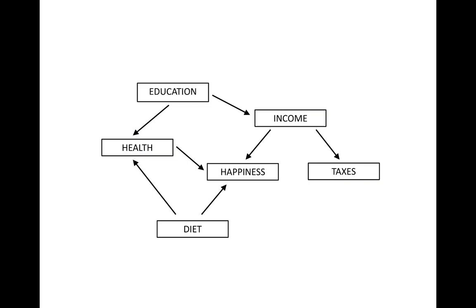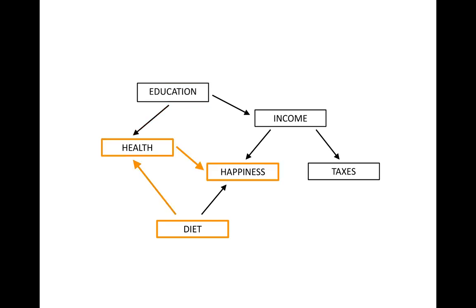A variable by itself is not a collider or a non-collider — it is a collider or a non-collider on a path. For example, the variable health in this graph is by itself neither a collider nor a non-collider. On the path diet to health to education, health is a collider. But on the path diet to health to happiness, health is a non-collider.